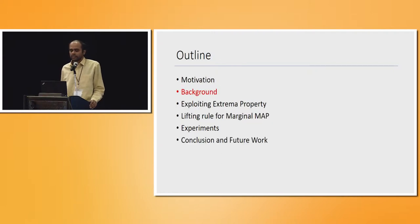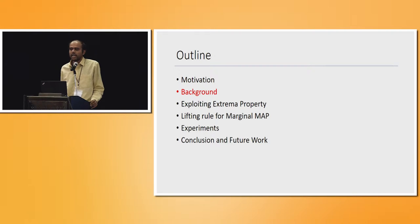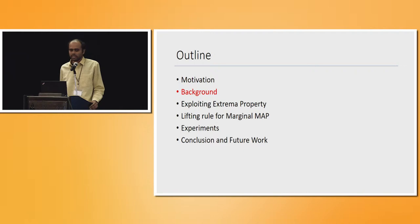Here is a brief outline of the talk. I'll describe background on statistical relational models, in particular Markov logic. I'll describe the two main contributions: exploiting the extrema property and the lifting rule for marginal MAP inference. I'll describe experiments and conclude with directions for future work.